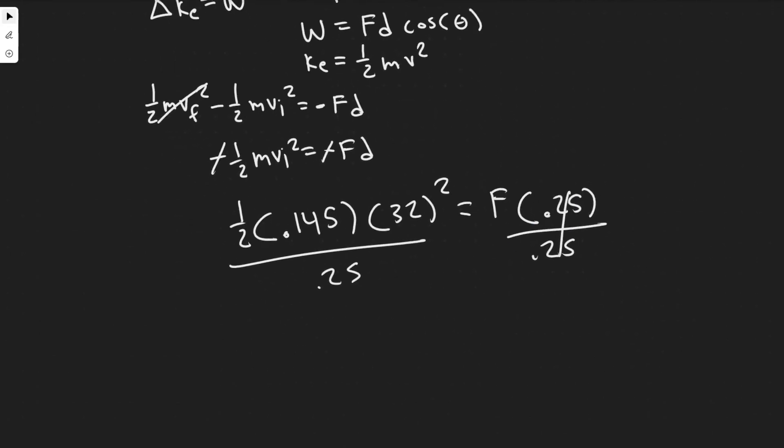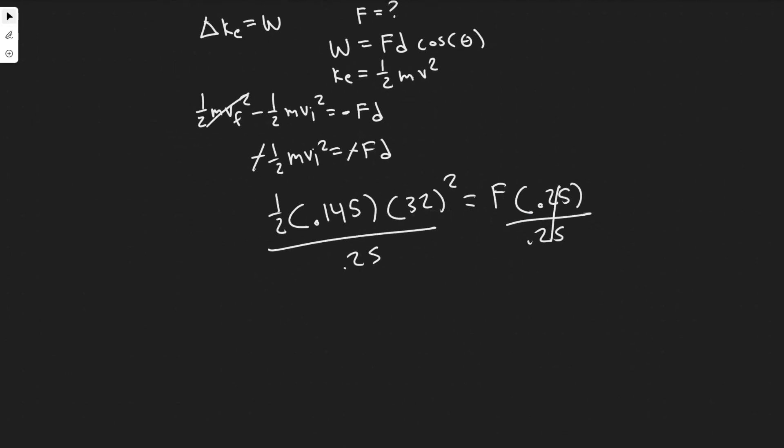So dividing by 0.25. So this is going to be what we have to plug in to solve for the force now. So 0.5 times 0.145 times 32 squared. And then you're going to divide that by 0.25. So you're going to get the force is equal to 296.26.